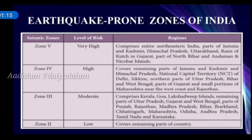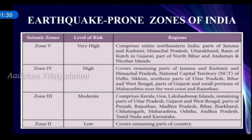Zone 3, moderate or medium risk, comprises Kerala, Goa, Lakshadweep Islands, remaining parts of Uttar Pradesh, Gujarat, West Bengal, parts of Punjab, Rajasthan, Madhya Pradesh, Bihar, Jharkhand, Chhattisgarh, Maharashtra, Odisha, Andhra Pradesh, Tamil Nadu and Karnataka. Zone 2, low risk, covers remaining parts of the country. No area of India is classified as Zone 1.